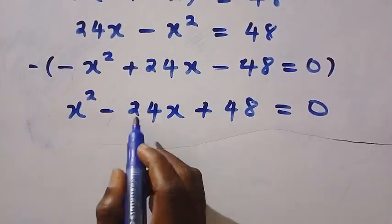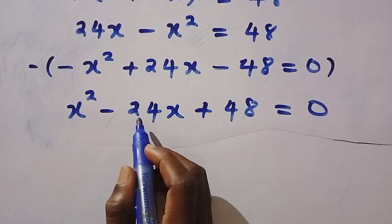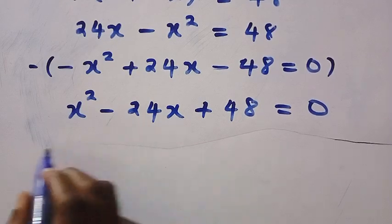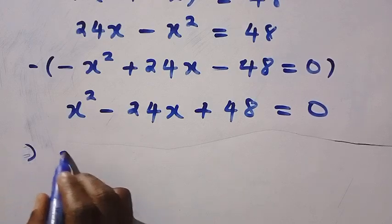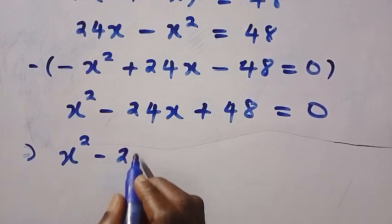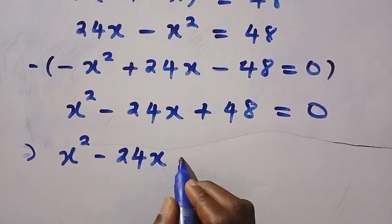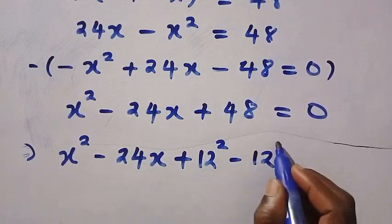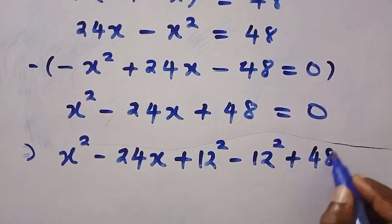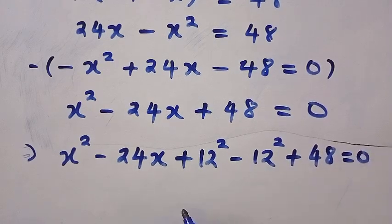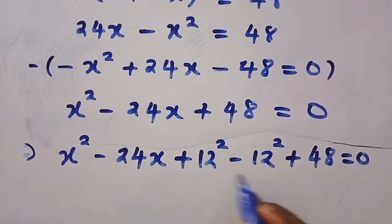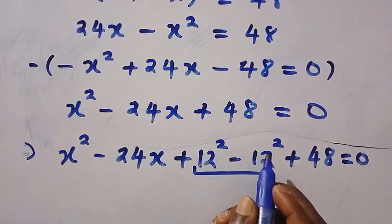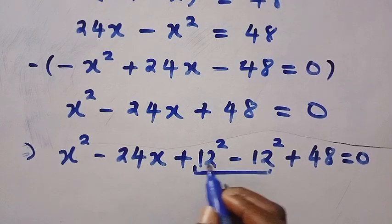What we do is: take this 24, divide by 2, and we get 12. Then we take the square of 12, and add it and subtract it from the equation. This implies we have X squared minus 24X, then plus 12 squared minus 12 squared plus 48 equals 0. This is still the same expression — it's just manipulation by adding and subtracting 12 squared.